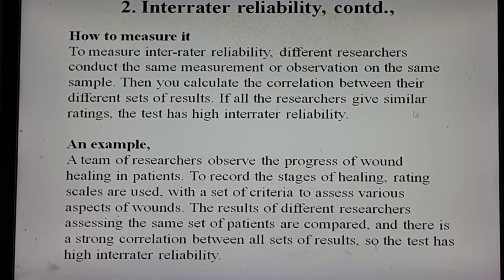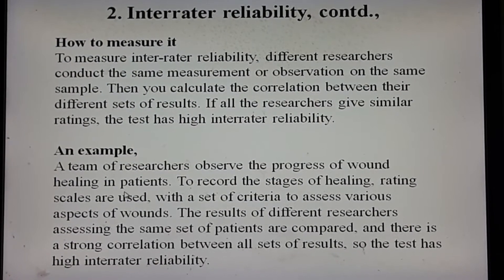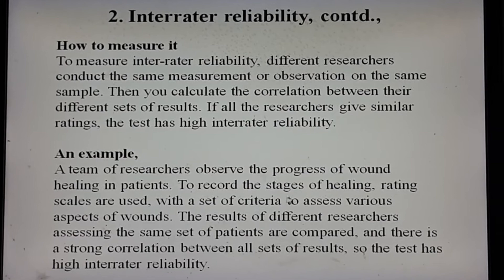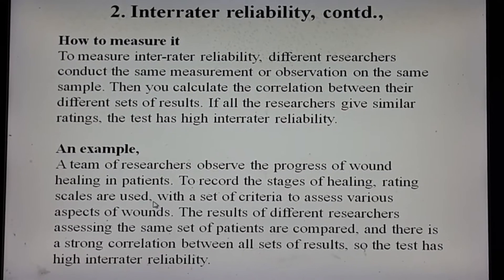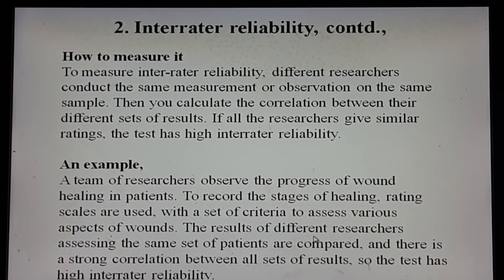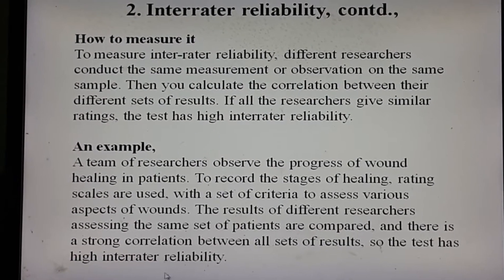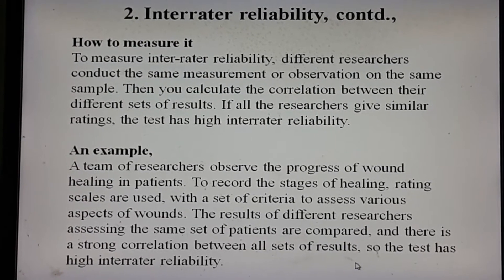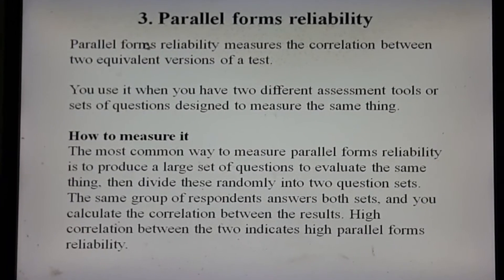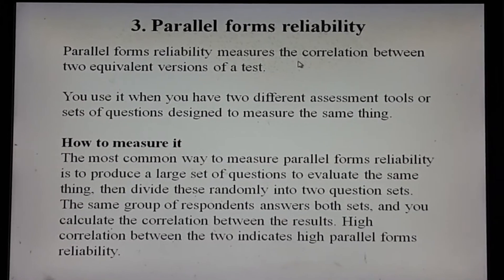If all the researchers give similar ratings, the test has high inter-rater reliability. For example, a team of researchers observes the progress of wound healing in patients to record the stages of healing. Rating scales are used with a set of criteria to assess various aspects of wounds. The results of different researchers assessing the same set of patients are compared, and there is a strong correlation between all sets of results, so the test has a higher level of inter-rater reliability.